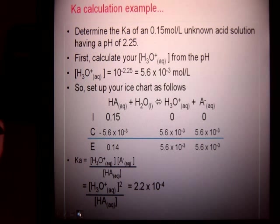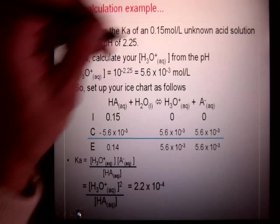As an example, I want to find the Ka of some unknown acid that has a concentration of 0.15 mol/L.